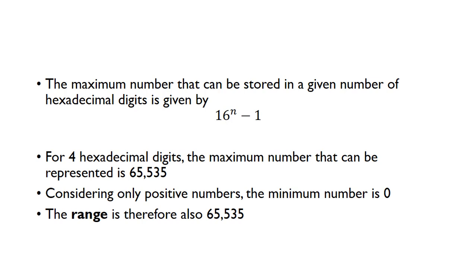The maximum number that can be stored in a given number of hexadecimal digits is 16 to the power n minus one. With fewer digits, the bigger the base, the larger the number you can fit. For four hexadecimal digits, we can represent up to 65,535, and with only positive numbers, the range is also 65,535.